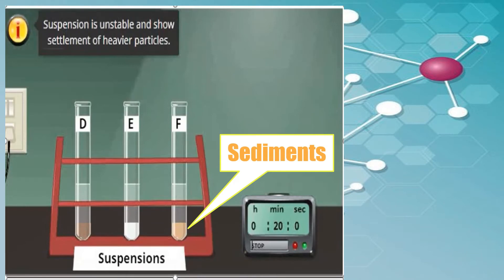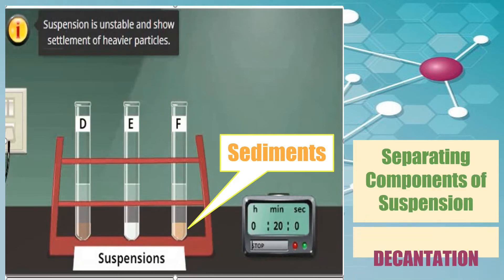Do you remember this experiment? In this experiment, we've proven that suspension is unstable and shows settlement of heavier particles. They are called sediments. When these sediments are settled down at the bottom of the container, we can now separate the liquid part of the mixture from the solid part. This process or method of separation is called decantation.